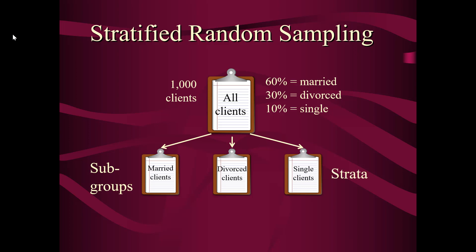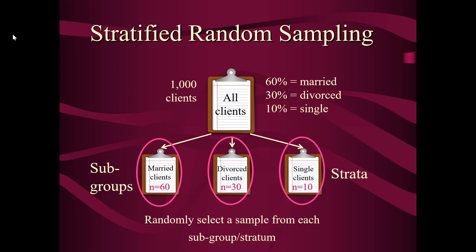So what I will do is divide that big list into smaller lists by marital status. These are called subgroups or strata. The individual list of married clients, for example, would be called a stratum. I would take a random sample within each sublist — so from my married clients list I might randomly pick 60, then do the same for just the divorced clients and just the single clients. The key is that I'm randomly selecting a subsample from each subgroup or stratum, not from the larger list.